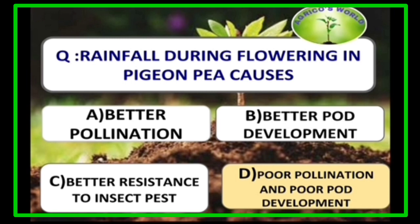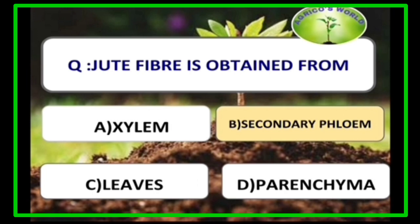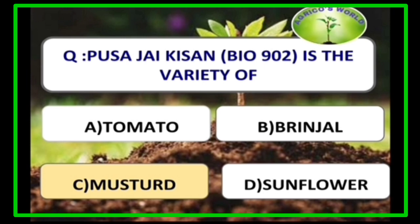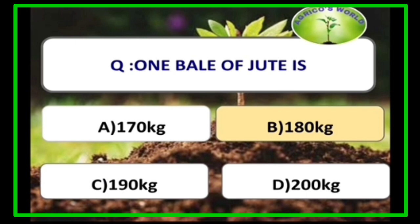Rainfall during flowering in groundnut causes poor pollination followed by poor pod development. Jute fiber is obtained from secondary phloem. Sugar beet and spinach both belong to the family Chenopodiaceae. Okra belongs to the family Malvaceae, and grass belongs to the family Poaceae. Pusa Jai Kisan (Bio 902) is the first hybrid variety of mustard developed by VL Chopra through somatic hybridization.